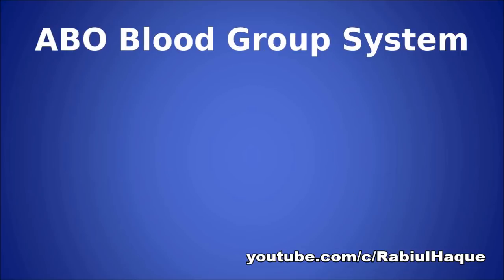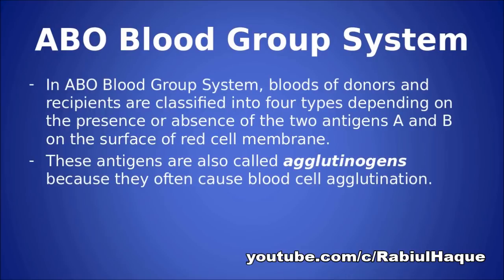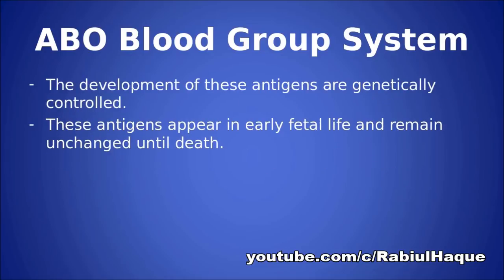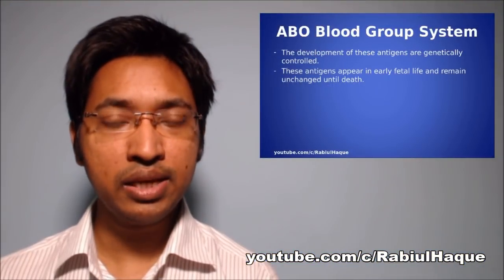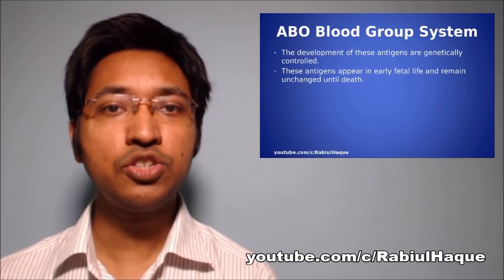Now let's talk about the ABO blood group system. In the ABO blood group system, bloods of donor and recipient are classified into four types depending on the presence or absence of two antigens, A and B, on the surface of red blood cell membrane. Always remember, these antigens are also called agglutinogens because they often cause blood cell agglutination. The development of these antigens is genetically controlled. These antigens appear in early fetal life and, once they have appeared, remain unchanged until death.